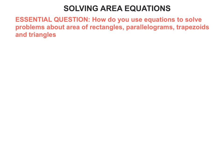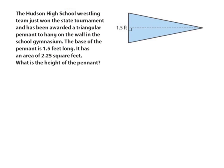You've already learned all the formulas and everything, so all we're going to do is talk about the actual problems themselves. Let's look at this first problem. The Hudson High School wrestling team just won the state tournament and has been awarded a triangular pennant to hang on the wall in the school gymnasium. The base of the pennant is one and a half feet long. It has an area of 2.25 square feet. So this whole blue shaded area equals 2.25 square feet. What is the height of the pennant?